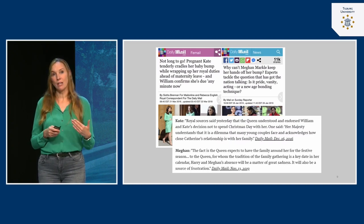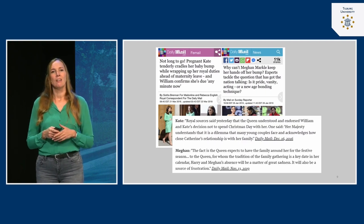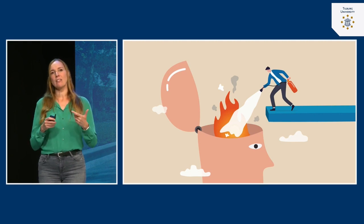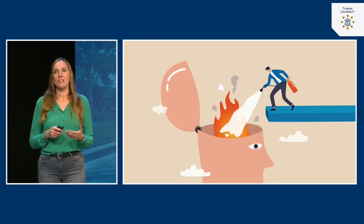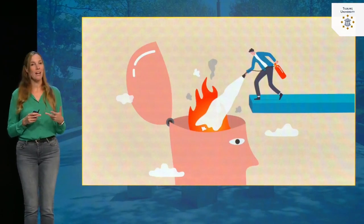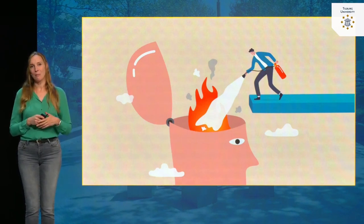The media has a lot of power by using spin framing — presenting information in a valenced way. We now see that how information is presented, whether through order effects or the way a story is framed, really impacts us and it's very hard to stay objective. The upside is that knowing this can help — you can be more on guard for the negativity bias, order effects, and spin framing when you encounter them in the media.